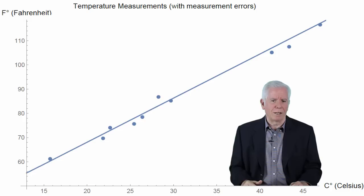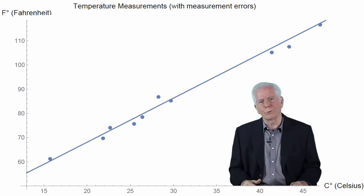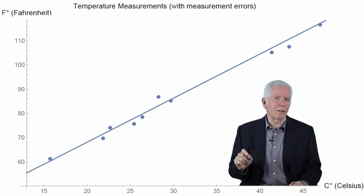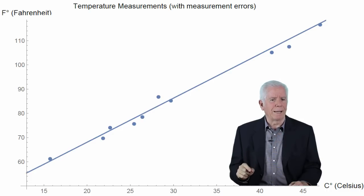How do we judge whether the points are close enough to a straight line so that one can deduce that there is a linear relationship between the two scales? This decision cannot be taken arbitrarily. To make this decision in an objective manner, we use statistical analysis.